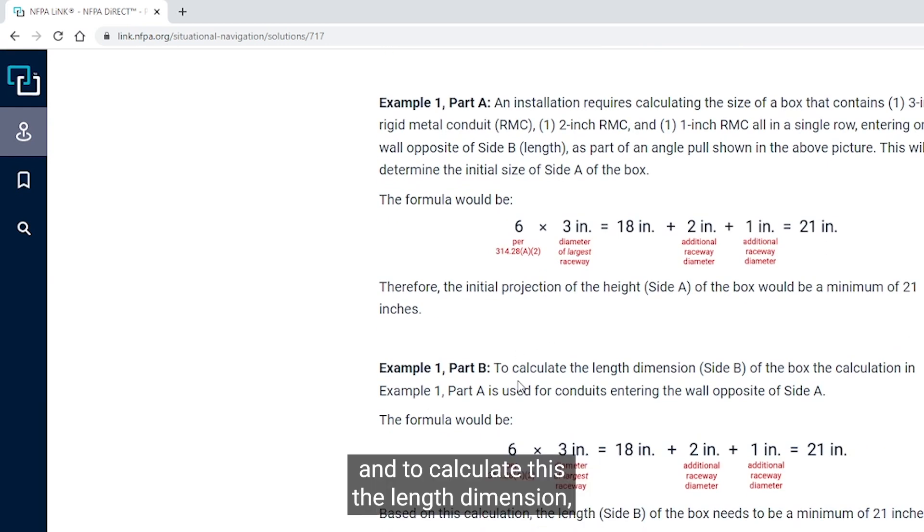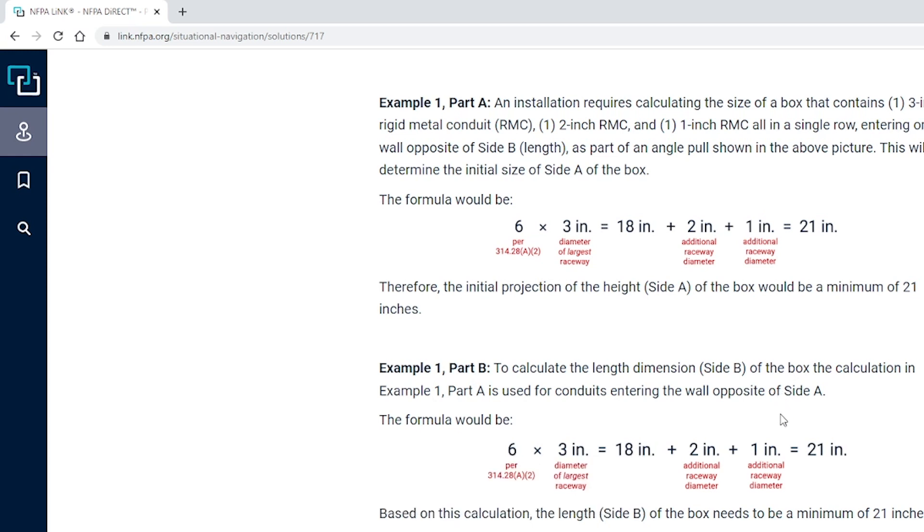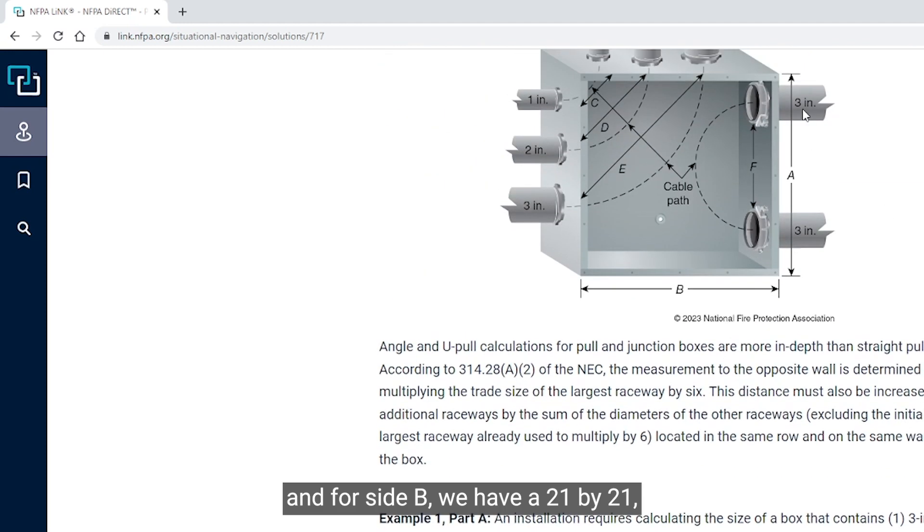This will be the formula: 6 times 3 equals 18, and then we add the other two raceways, which would be 3 additional inches, would give us a 21-inch box. So the installation of this box would be currently the projected side would be 21 inches for side A. Now we need to calculate for side B, which would involve these. We're going to go to Example 1, Part B.